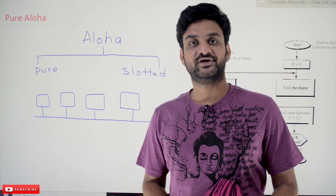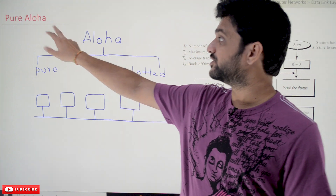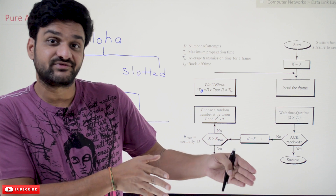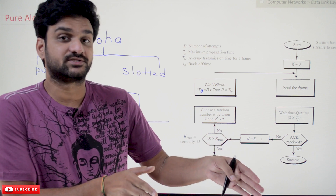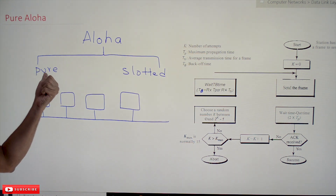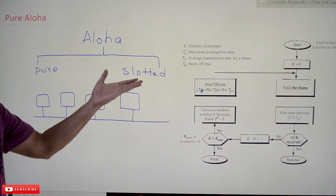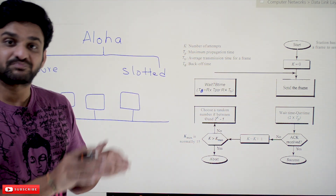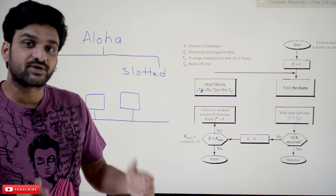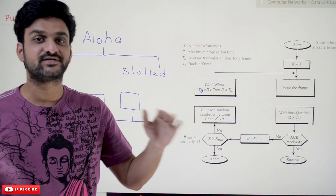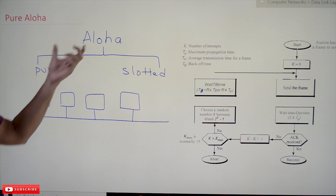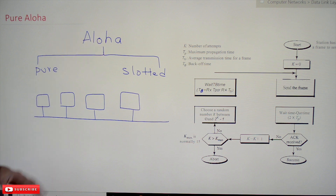Hi, welcome to Learning Monkey. I am Vikram. In this class we'll try to understand Pure Aloha. The theoretical concept of random access has already been discussed. There are different random access protocols available, and one of them is Aloha, which is divided into two different protocols: Pure Aloha and Slotted Aloha. These concepts have been discussed in our previous videos. Now, Pure Aloha is also the original version of Aloha.